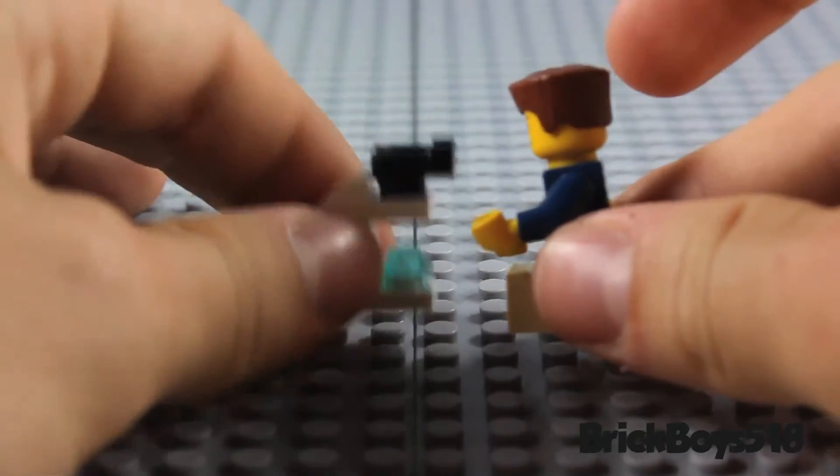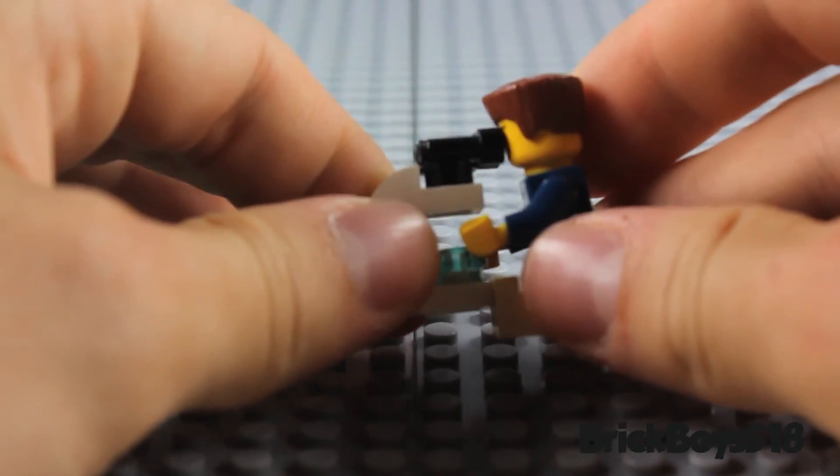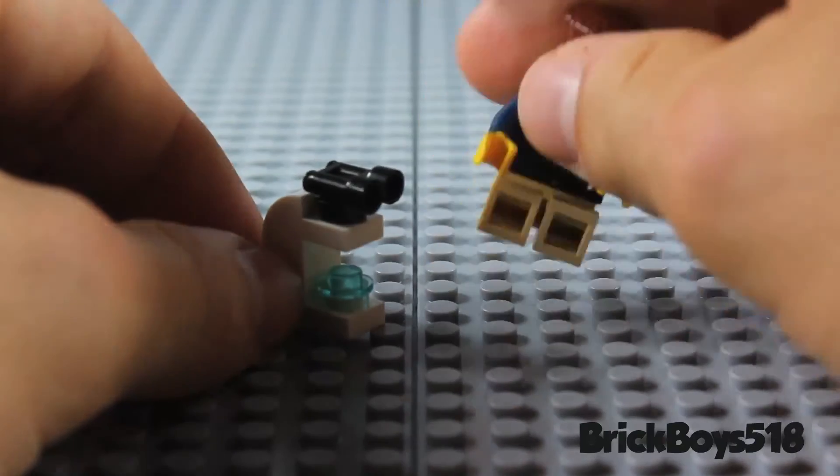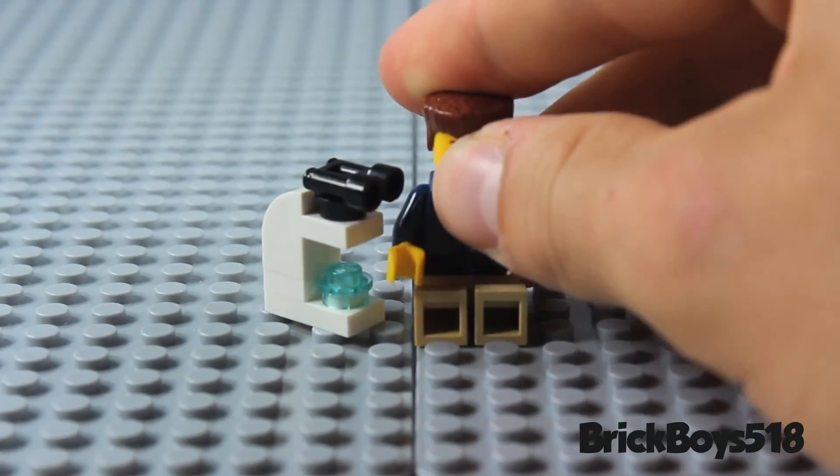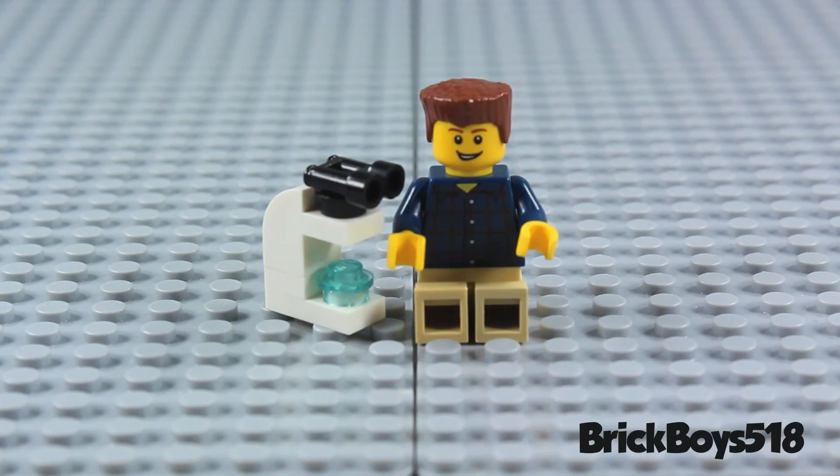And it offers the perfect sort of optics for your mini figure to look through and examine things. And it's a nice small portable size. So if you have some sort of Lego lab or anything it can fit right in there. And that is how you build a Lego microscope.